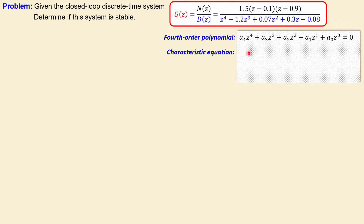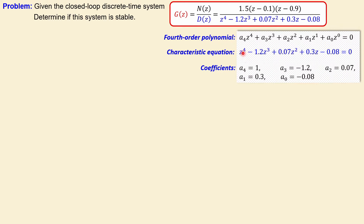Our characteristic equation is the denominator of the transfer function, which is z to the power 4 minus 1.2 z cubed, and so on, equated to zero. We identify the coefficients by comparing terms: a4 equals 1, a3 equals minus 1.2, a2 equals 0.07, a1 equals 0.3, and a0 equals minus 0.08. We now have all the coefficients.